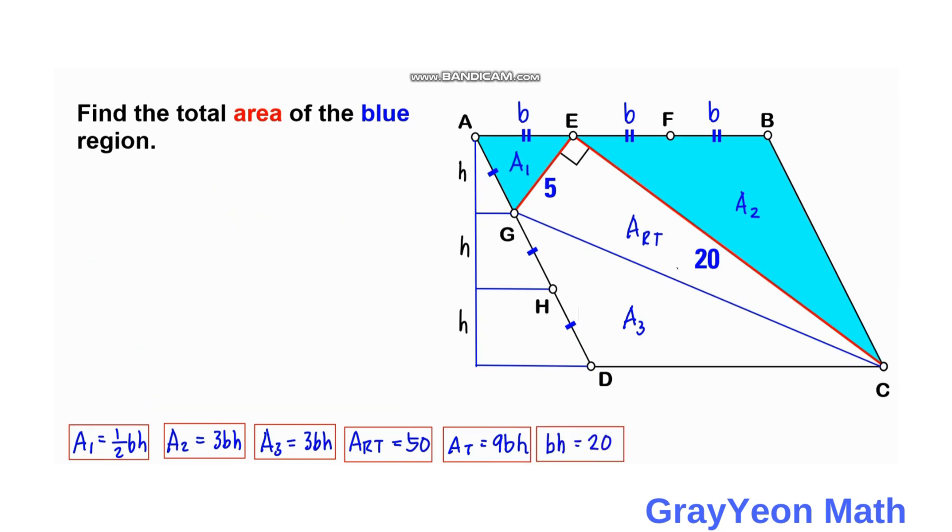So we can actually call this area of the shaded as area SH. So area SH is actually equal to area 1 plus area 2.